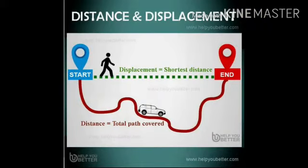So this diagram explains what is distance and displacement. Distance is nothing but the total path covered from starting point to the ending point. Displacement is nothing but the shortest distance between the two points.